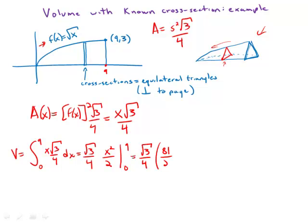And so what we get is root 3 over 4, 81 over 2, minus 0. And multiplying out, we get 81 root 3 over 8. And this expression here is the volume of this exotic shape.